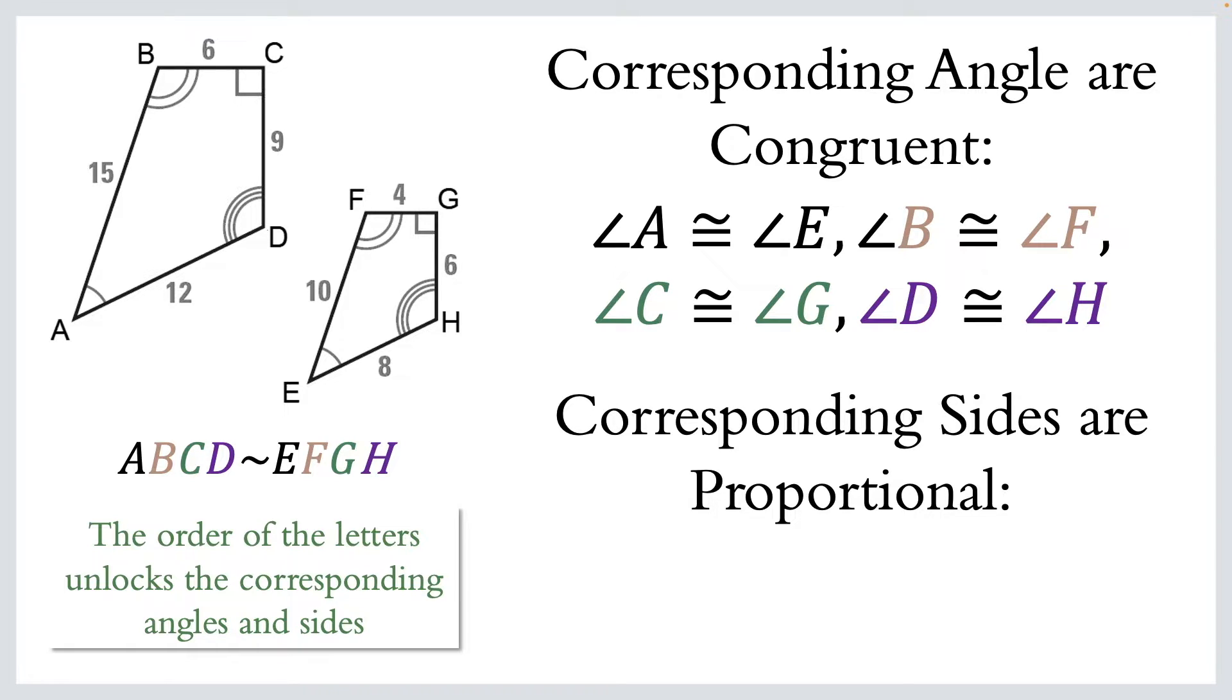Now let's talk about the corresponding sides. They are proportional, but we really have to figure out which sides match with the other sides. So again, the order of the letters unlocks the corresponding angles and sides. So AB are the first two letters. That matches with EF, the first two letters in the second polygon. AB corresponds to EF, BC corresponds to FG, CD corresponds to GH, and DA corresponds to HE. And all of those are proportional. Now, what does that mean? Well, let's dive into an example and we'll see.